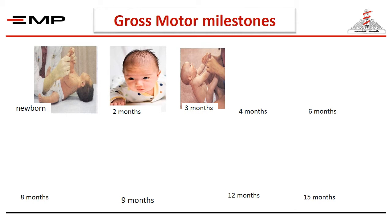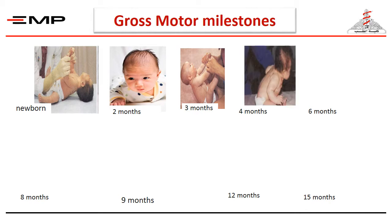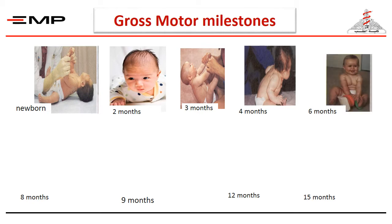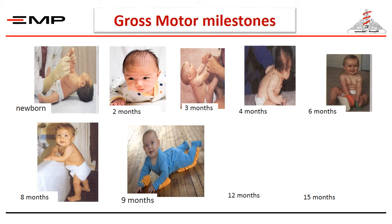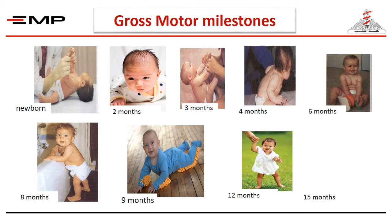At the age of four months, they start sitting supported. At the age of six months, they are able to sit without support. Then, standing supported at the age of eight months, and crawling at the age of nine months.